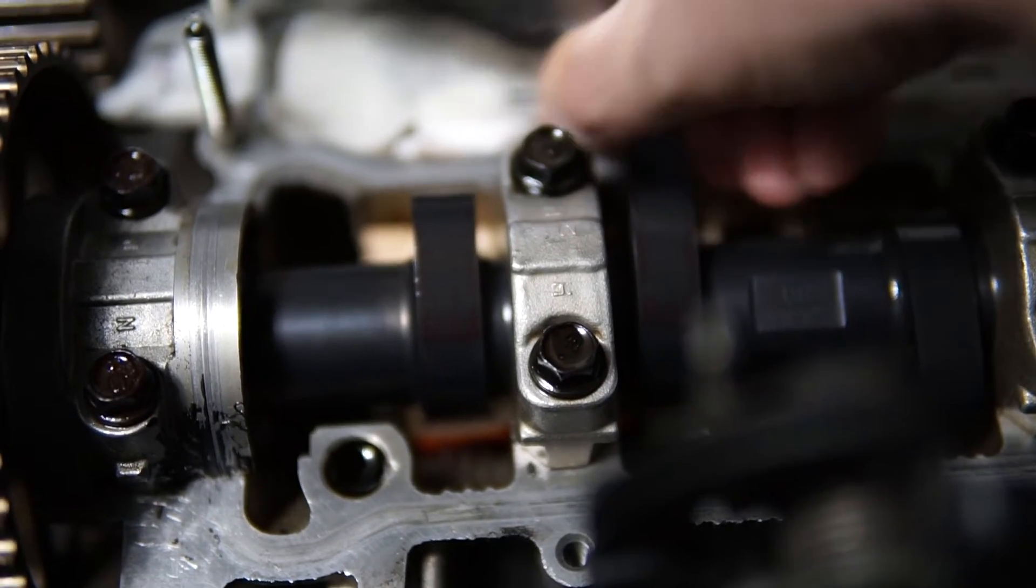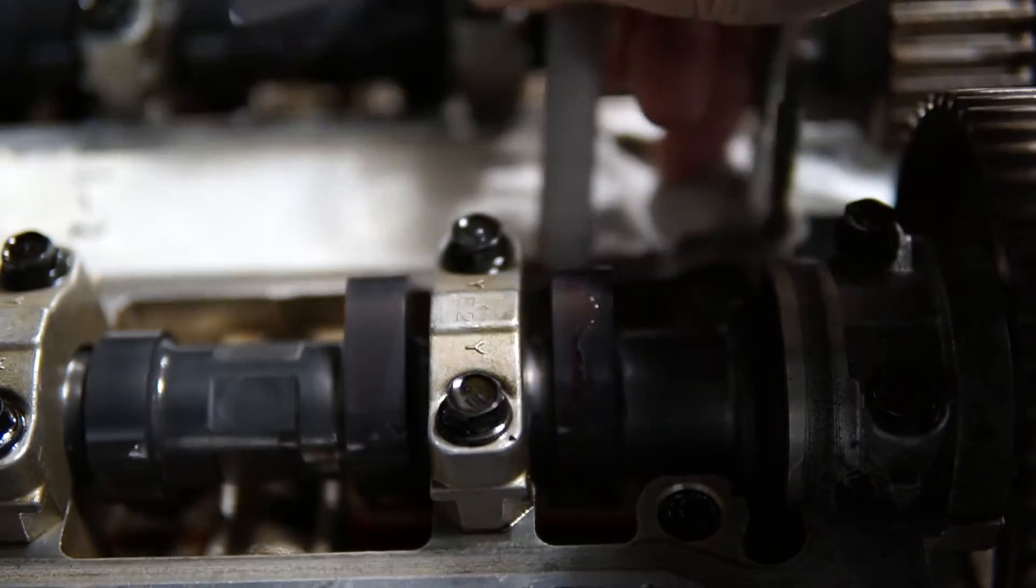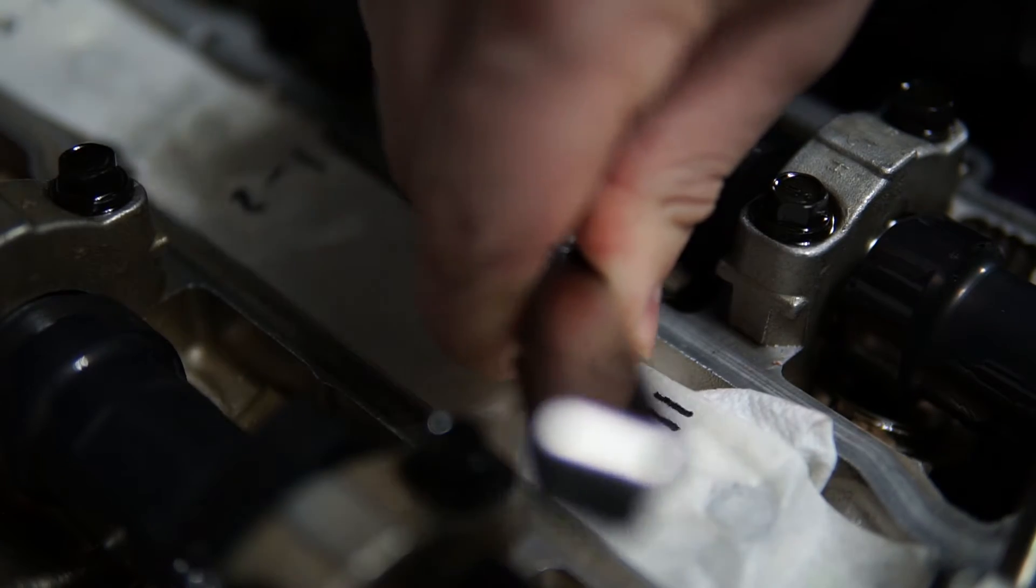In order to keep all the information you are recording organized, you'll need to write it down. The correct size feeler gauge should give a bit of resistance when placed between the camshaft and the shimmed bucket assembly.